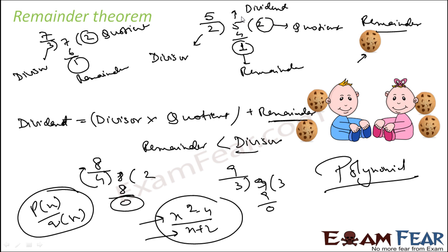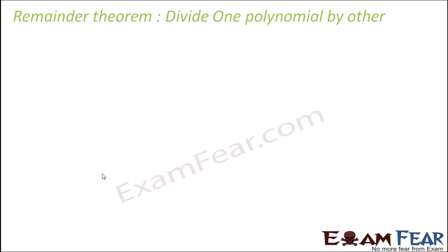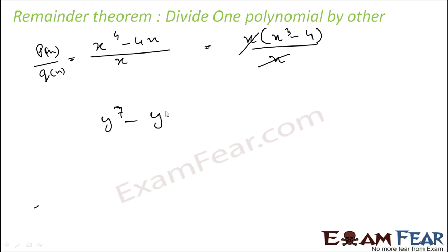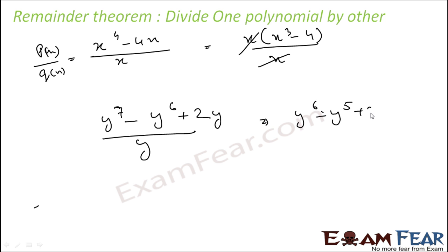In this slide we try to understand what a remainder is and how to divide two numbers. Sometimes you get a remainder, sometimes you don't — if you don't get a remainder you say one is a factor of the other. Now let's try to divide two different polynomials. Let's divide x⁴ minus 4x by x. If you take x as common, p(x) becomes x times (x³ minus 4) and q(x) is x, so you get x³ minus 4. Or for y⁷ minus y⁶ plus 2 divided by y, this becomes y⁶ minus y⁵ plus 2 divided by y — you can actually divide two polynomials.